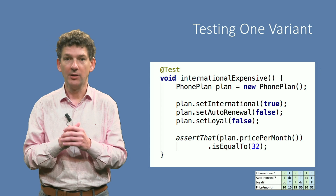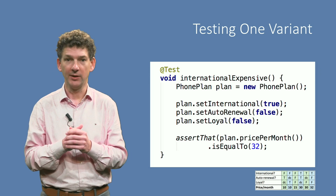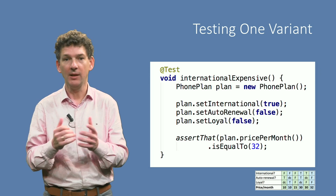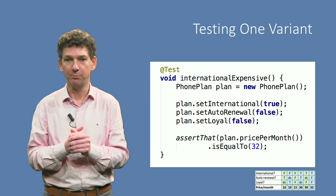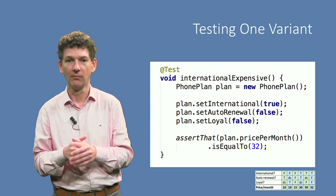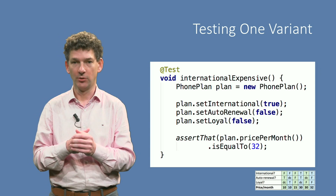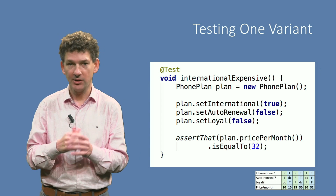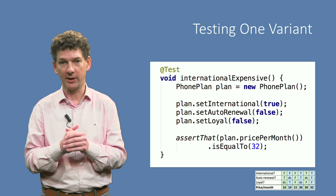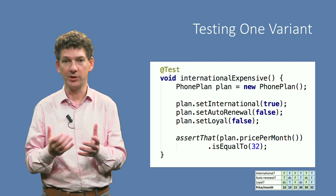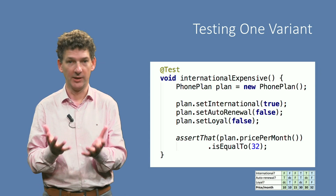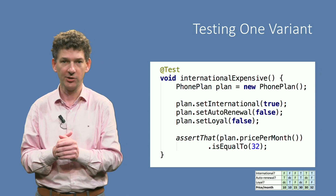Next, the method implementing the conditional logic is applied — in this case the price per month method. The result of that method is then compared against the expected value, which in this case is 32, as listed in the decision table.